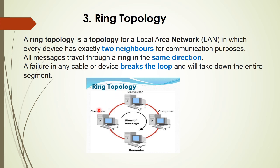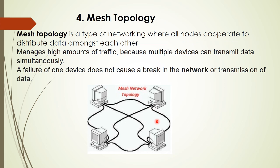Ring topology is a topology in which every device has exactly two neighbors. In this topology, each device has two neighbors for communication purposes. All messages travel through the ring in the same direction. A failure in any cable or device breaks the loop and the entire segment will stop working.